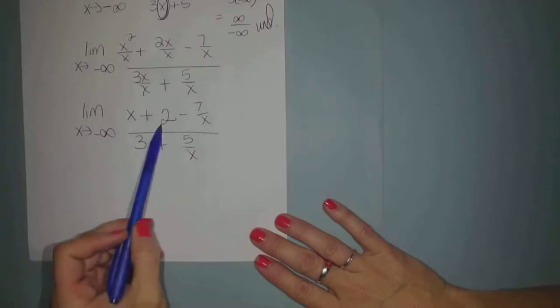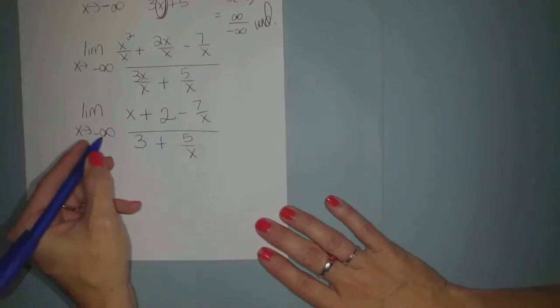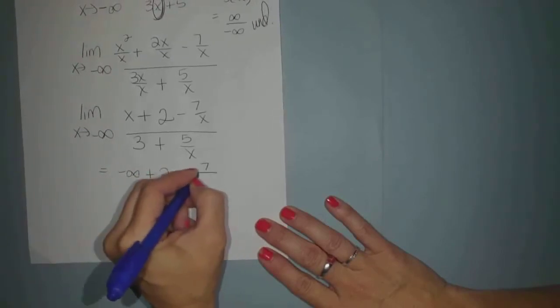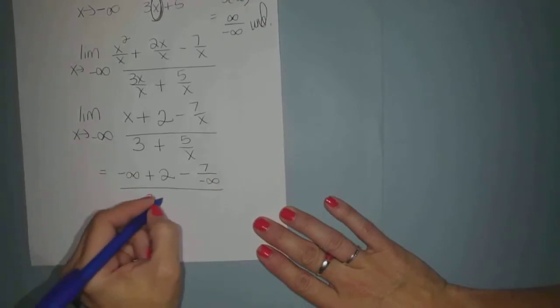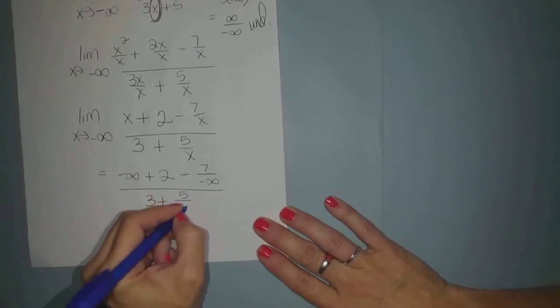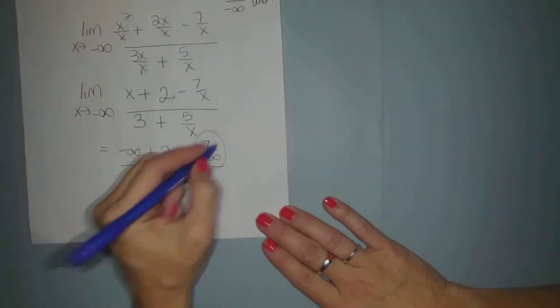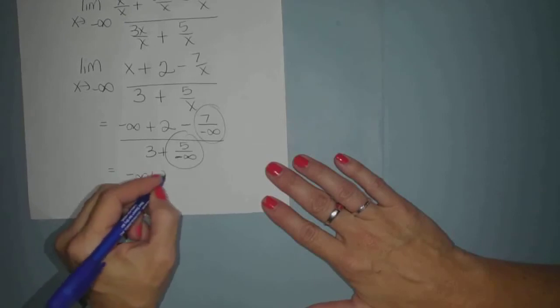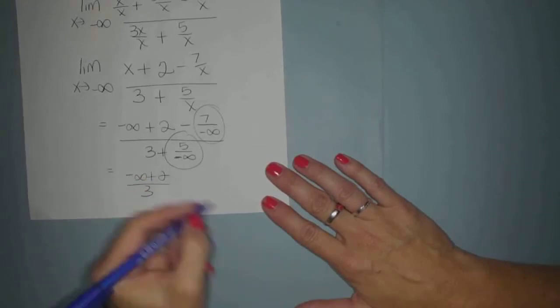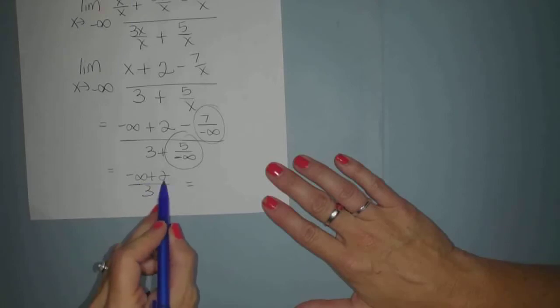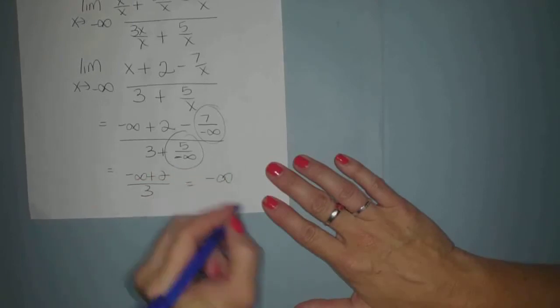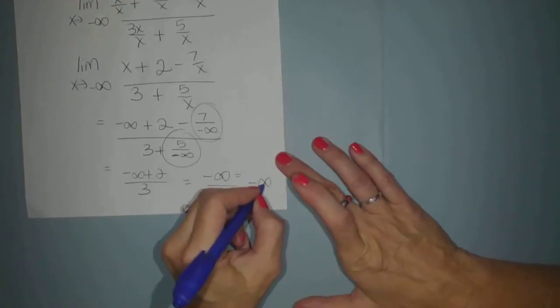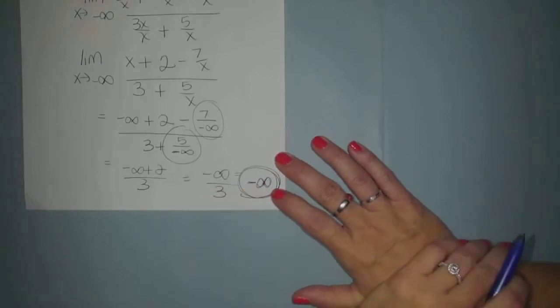So now I'm ready to plug my negative infinity back one more time. So plugging in, that would be negative infinity plus 2 minus 7 over negative infinity divided by 3 plus 5 over negative infinity. Now I know these two guys here and here go to 0. So with that being said, I've got negative infinity plus 2 all over 3. Negative infinity, if you add 2 to negative infinity, you're still going to be very small with no bound. And if you divide that by 3, you're still going to be very small. So I'm going to go with a final answer of negative infinity.